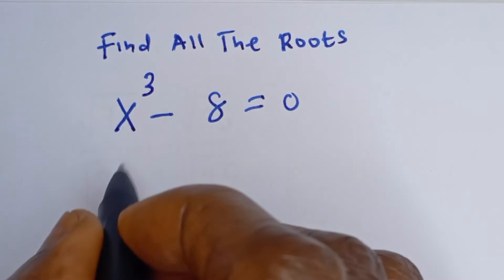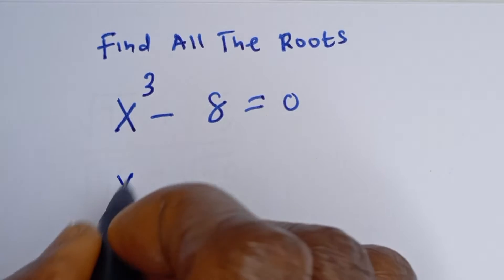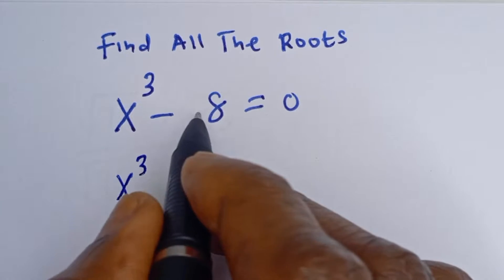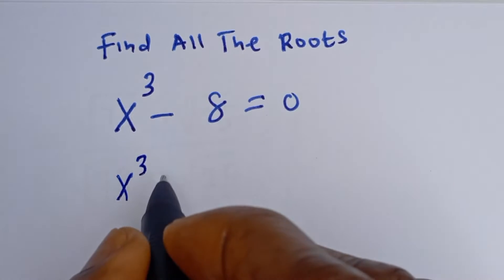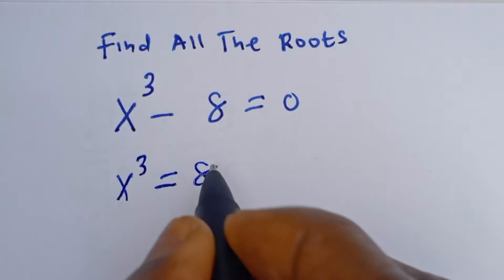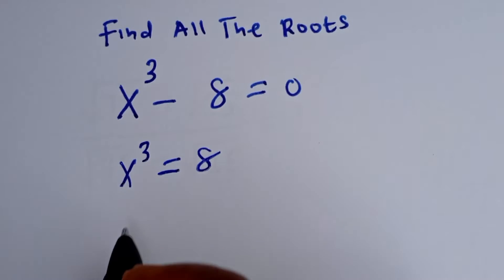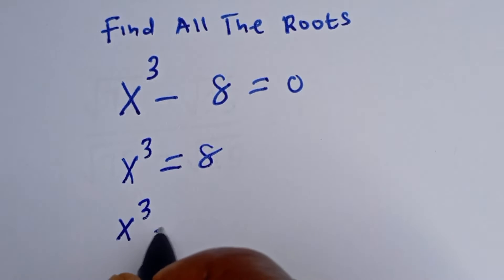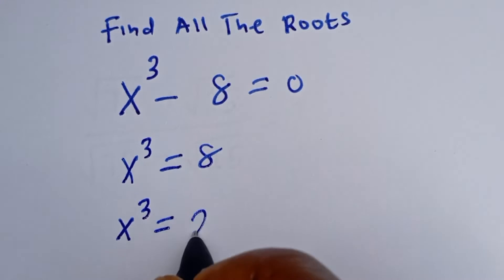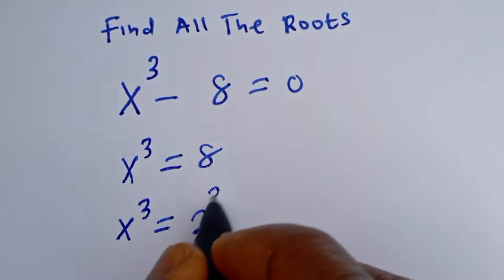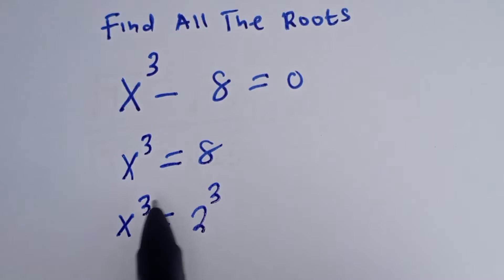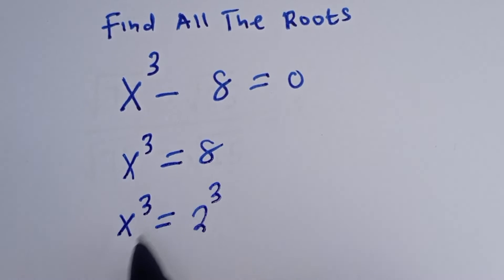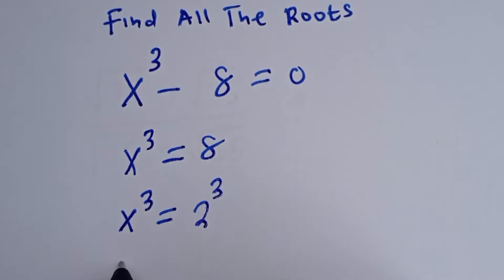Now, we have s to the power of 3. Let's take this 8 to this side, so s to the power of 3 is equal to 8. s to the power of 3 equal to 8 can be written as 2 to the power of 3. Then we can see that the exponent is equal, therefore s is equal to 2.